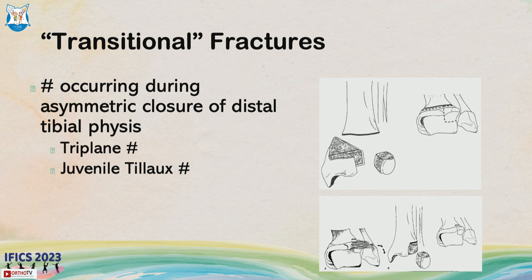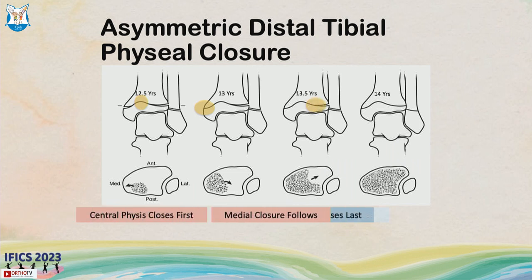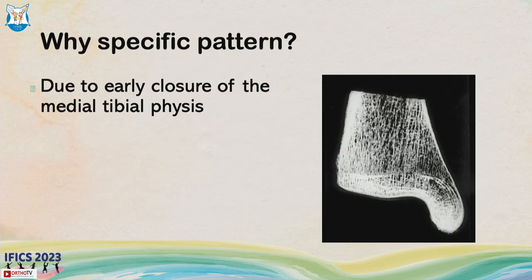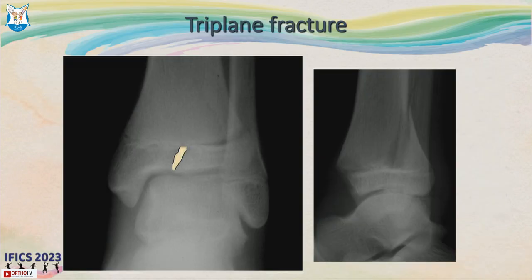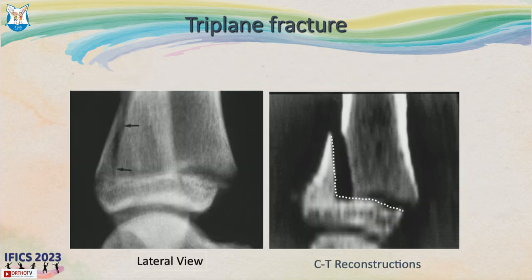Transitional fractures occur because the distal tibial physis closes from central first, then medially, and last laterally — so the lateral side remains open for longer. Most respondents thought medial closed first, but it is actually central, then medial, then lateral last. Because of this asymmetric closure, you get a specific pattern: an epiphyseal injury laterally and a metaphyseal injury medially — this is the triplane fracture, often missed on AP and lateral radiographs.